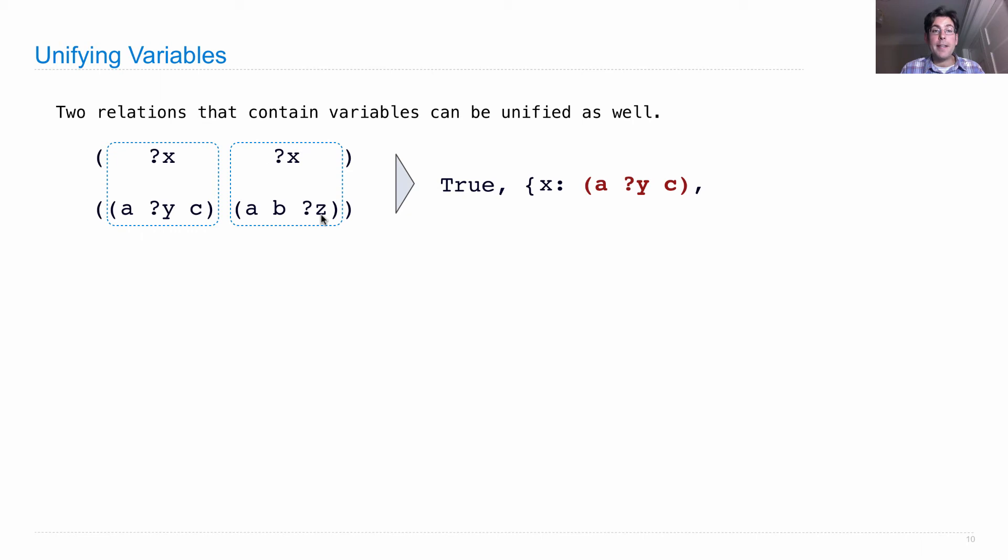Because what happens next is we try to unify these two. We look up x to find that it's a y c. So what we're really unifying is a y c and a b z after lookup. And this is possible as long as we bind b to y and c to z. So a is fine, we establish that binding, we establish that binding because unification just goes through element by element. And then we're done. So we have an assignment of values to variables that completes this unification.